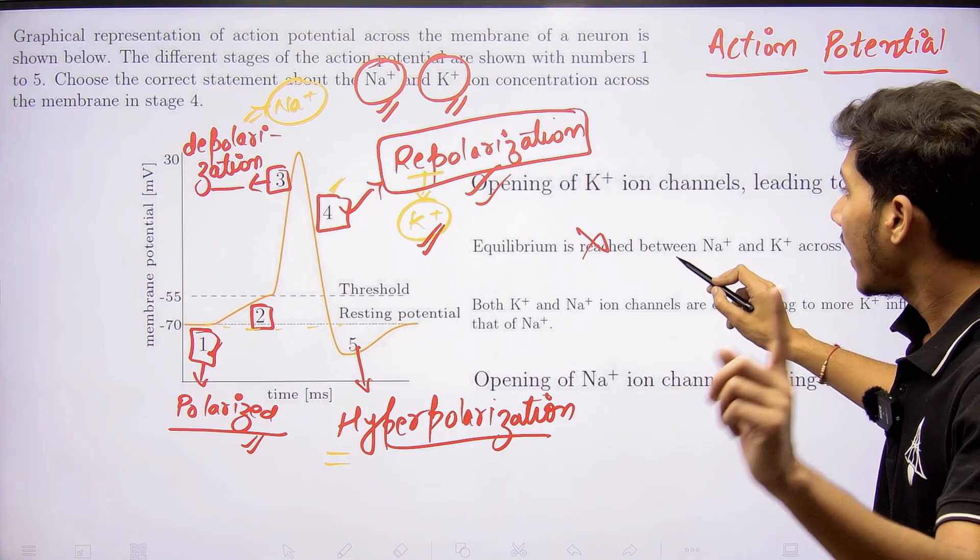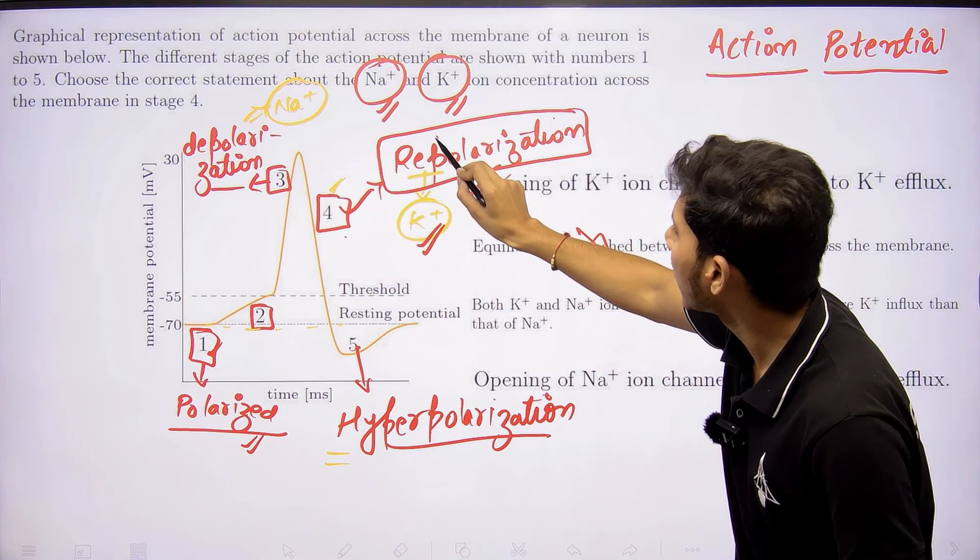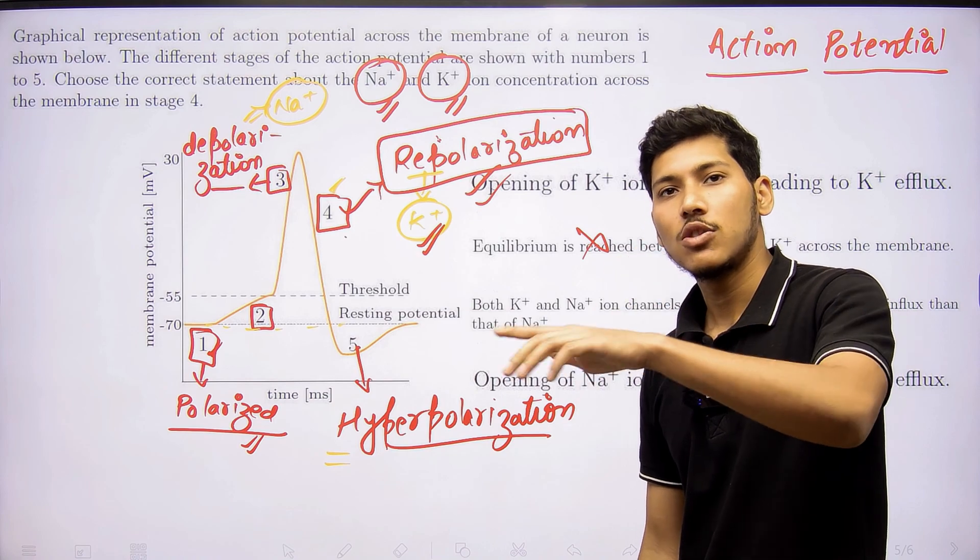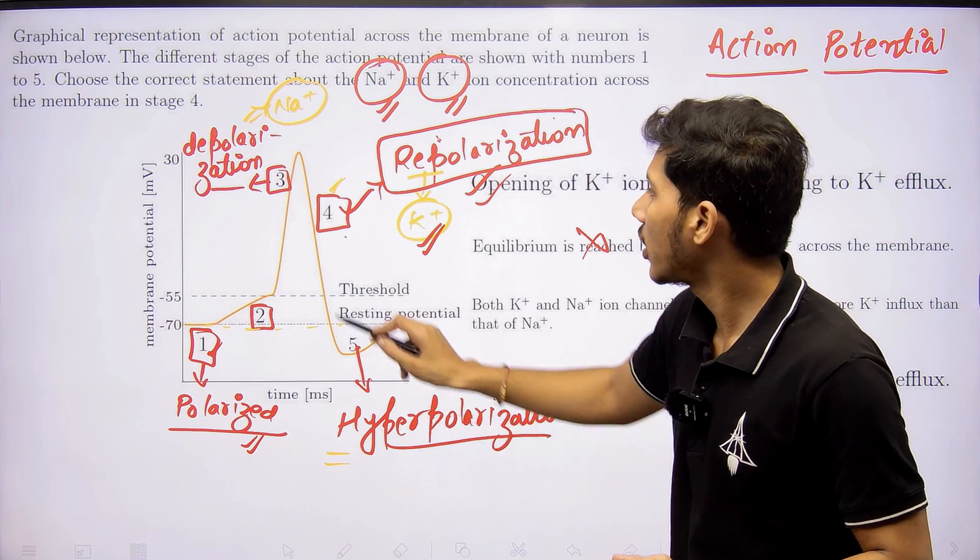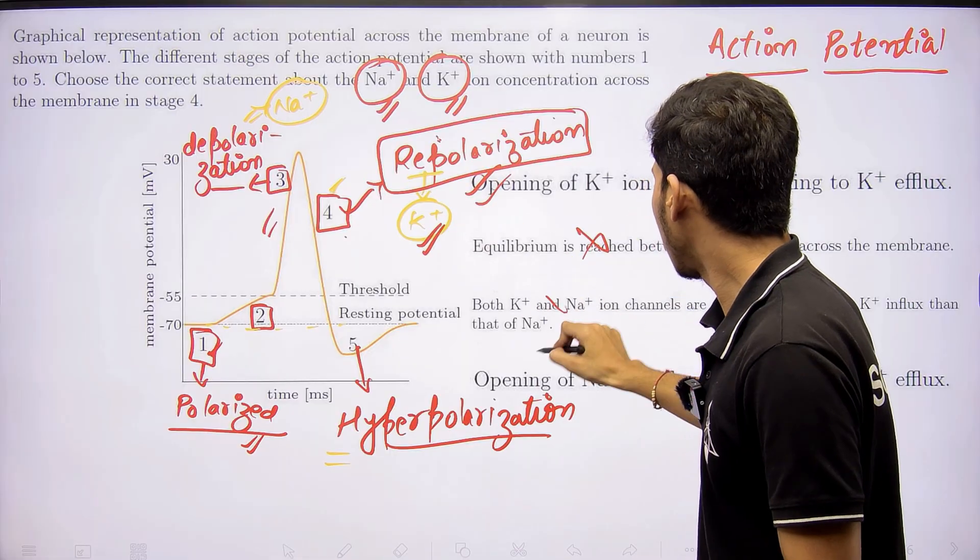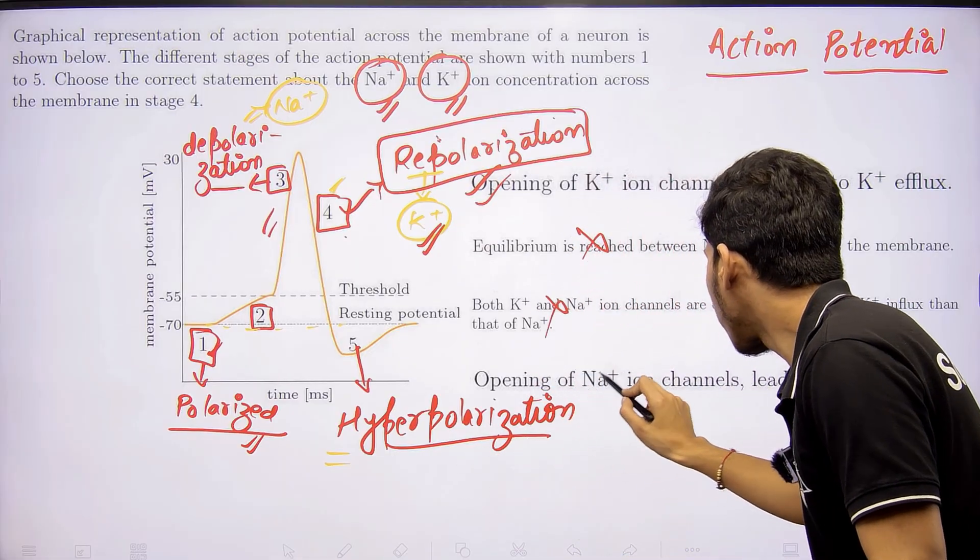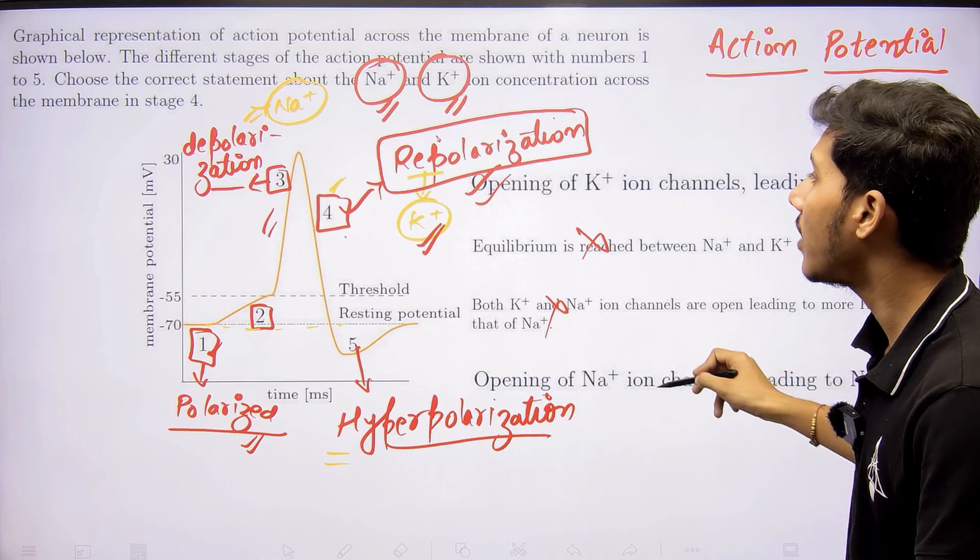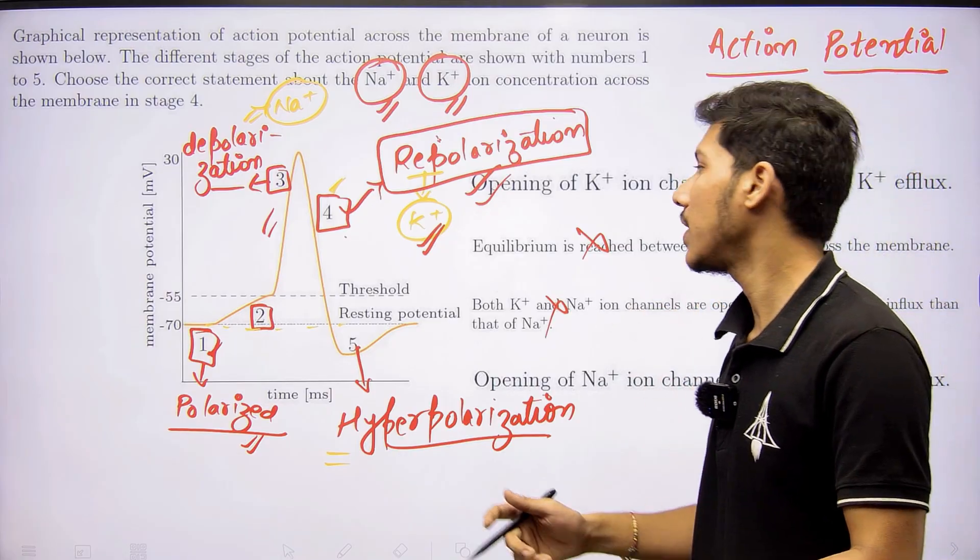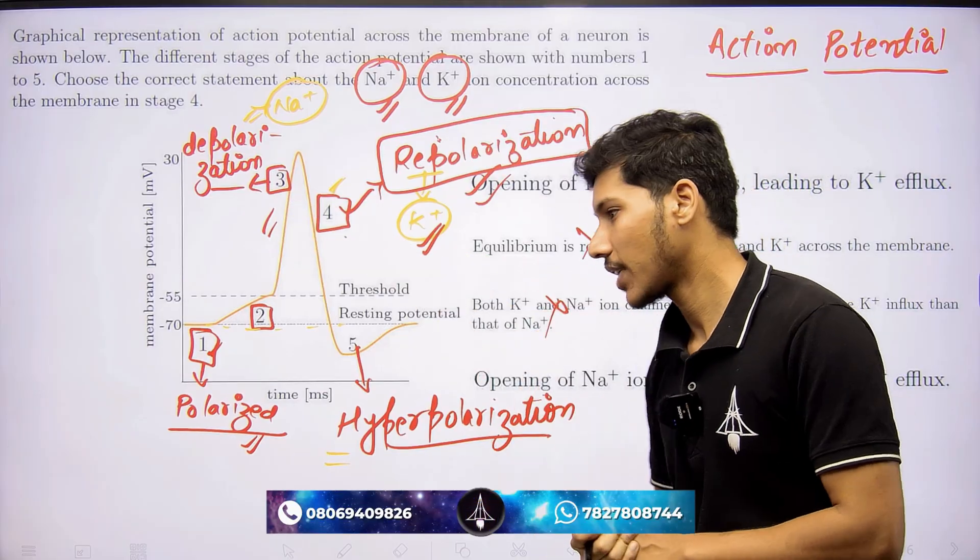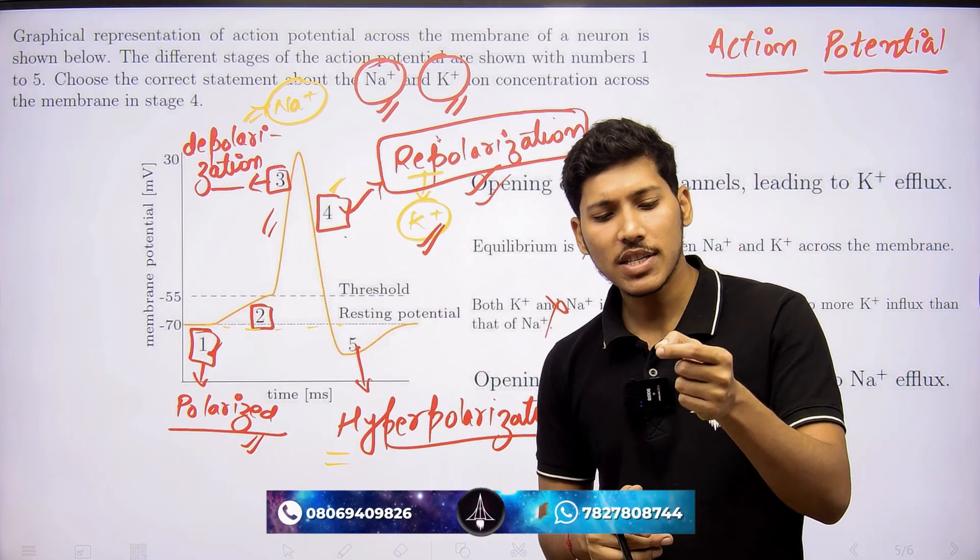Both K+ and sodium ion channels are open - no, in step four or repolarization, only voltage-gated potassium ion channels open, not sodium. Sodium ion channels open in step three. Opening of sodium ion channels leading to sodium efflux - no, sodium influx happens in step number three. Sodium efflux never happens; sodium influx happens in very trace amounts in the normal stages.